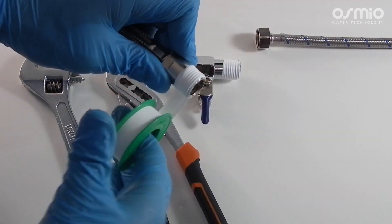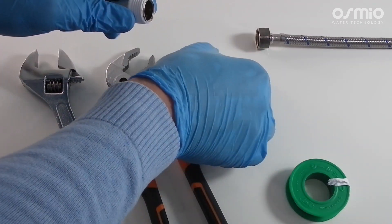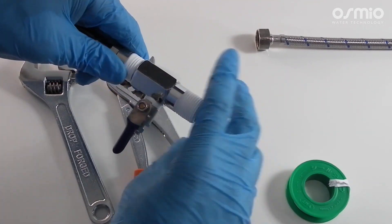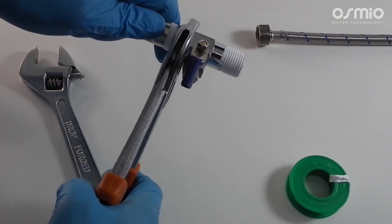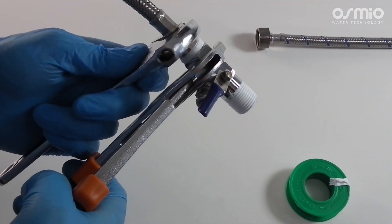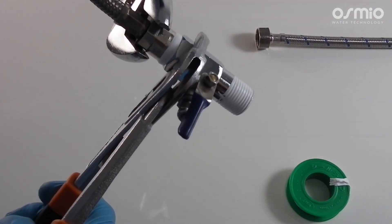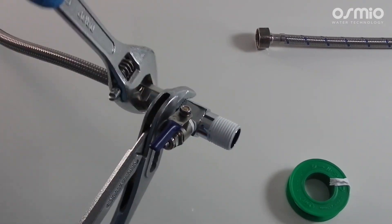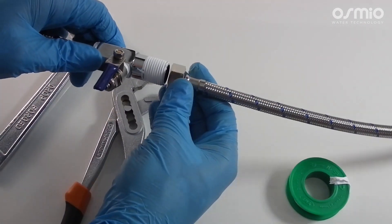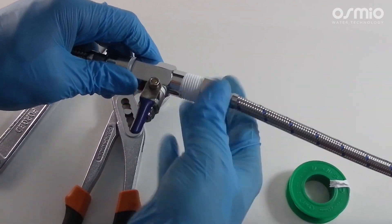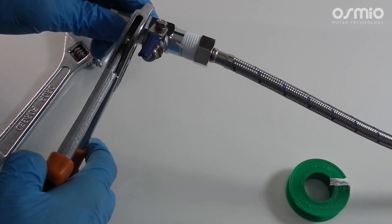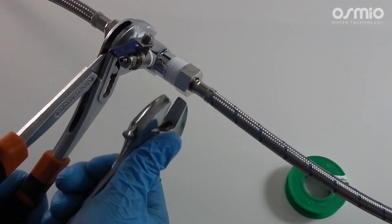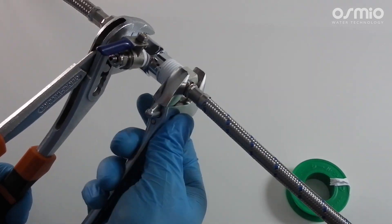Now we will fit the diverter valve between the main cold water feed, which normally has a 1.5 inch male thread connection, and the cold water line with 1.5 inch female thread to sink. Make sure to use PTFE tape on the male thread to make the connection watertight. You can use the spanner to support the diverter valve while tightening connections with a wrench.